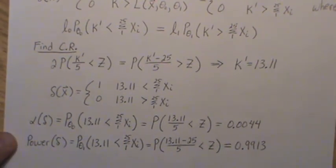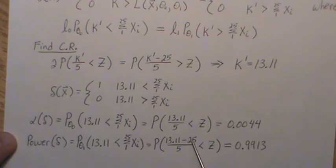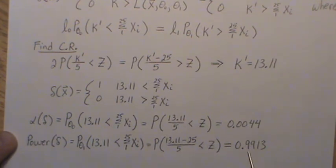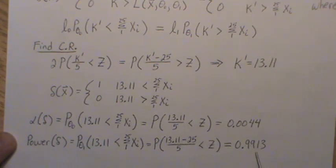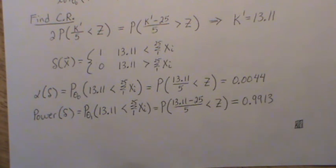The Neyman-Pearson lemma proves the MPT cannot be beaten at the same alpha level. The power of the minimax decision function — the probability of rejecting when the alternative is true — after standardizing to a z random variable, is 0.9913. That's all for this video. Hopefully you enjoyed it. Please like the video and subscribe so you don't miss the next one.